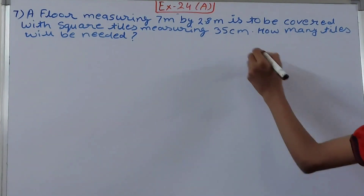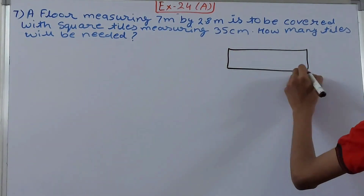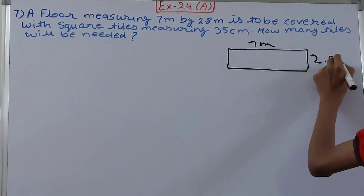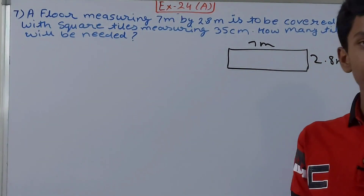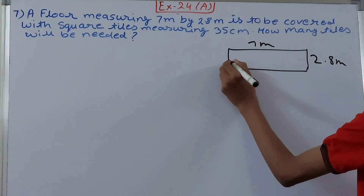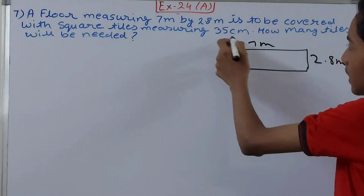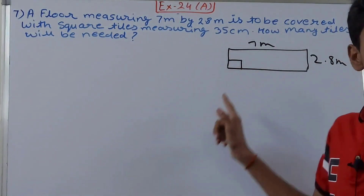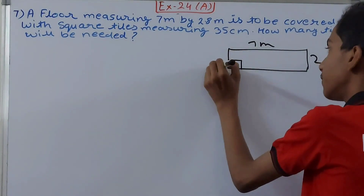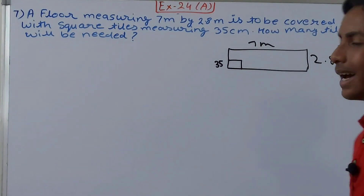So, if this is my floor, this part here is my floor - 7 meters by 2.8 meters. Now in this floor I have to put several tiles. Suppose I have put one tile like this over here. The tile is a square and each of its sides is 35 centimeters.